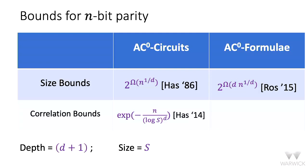We have size lower bounds from Hastad and Rossman, and correlation bounds from Hastad, and all are optimal. There's an obvious question: what about the last entry in this two-by-two grid — correlation bounds of AC0 formulae against parity? If you believe the conversion from circuits to formulas goes from size S to S to the power D, then the correlation bound should get an extra D to the D factor. This result would imply all the other results and unify all four results in the grid.